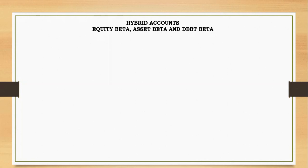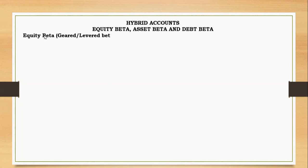We have seen what CAPM is like — it includes systematic risk, which we call beta. For equity, if you need the cost of equity you have to use a figure called equity beta. So what is equity beta, what is asset beta, and what is debt beta? This is what we are going to explore here.